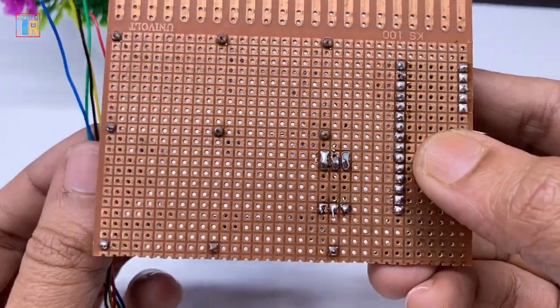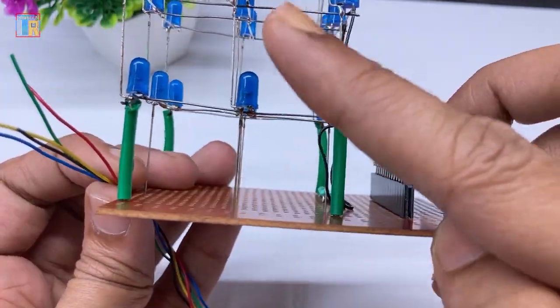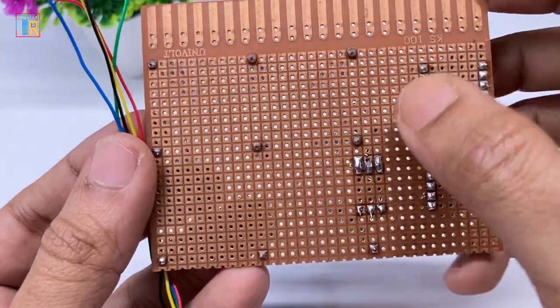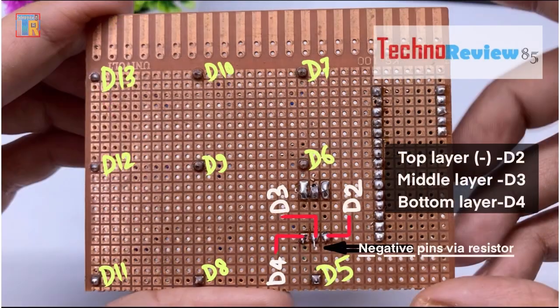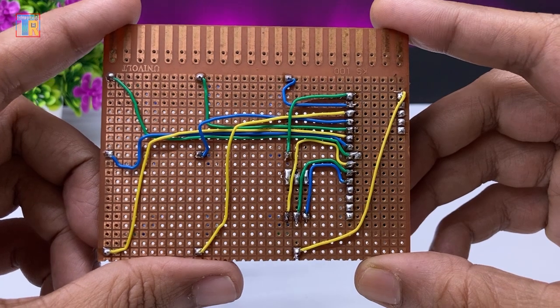Now I will connect the wires from the Arduino digital pins to the LEDs. Here is the connection diagram. This is very important. Connect the LEDs to the Arduino digital pins carefully.